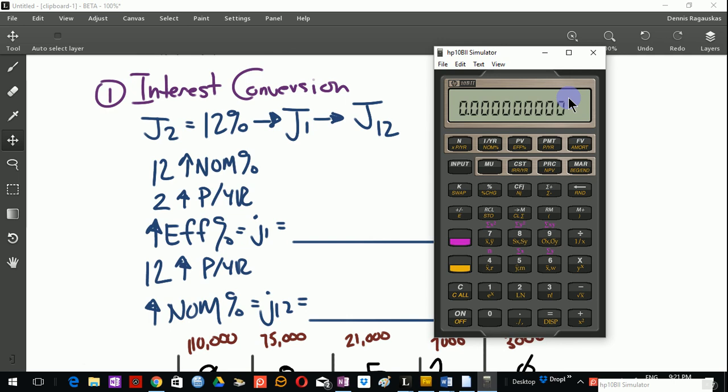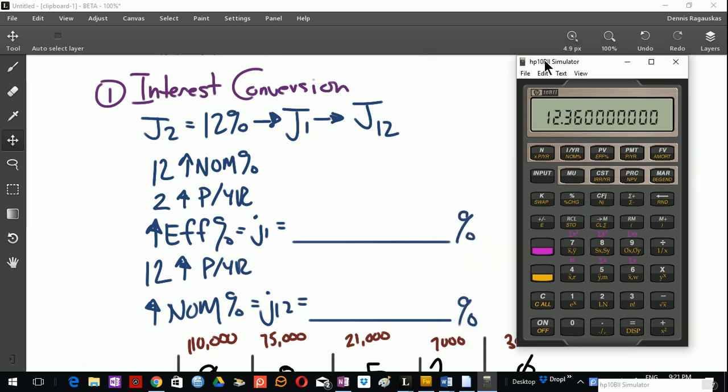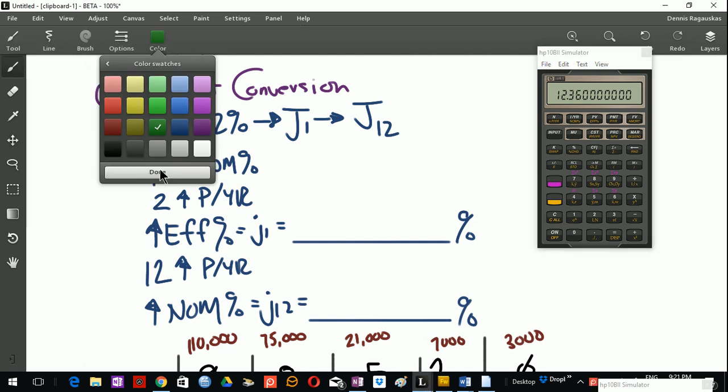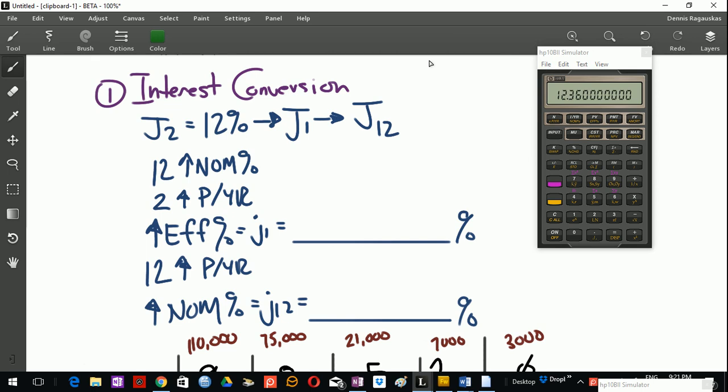Okay, so I will first convert the interest rate. So we'll go shift, clear all. Remember, it's always a good practice to go shift, clear all before you start any question. So we'll go 12, shift, NOM, 2, shift, PYR, shift, effective. And we get to 12.36 as our J1 rate.